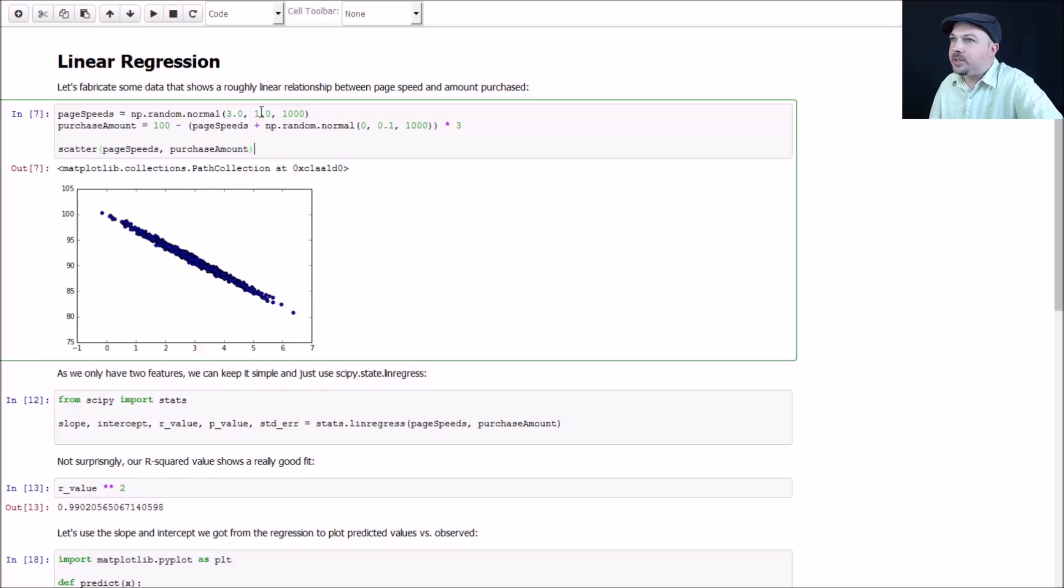I've made a normal distribution of page speeds centered around three seconds with a standard deviation of one second, and I've made the purchase amount a linear function of that. So I'm making it 100 minus the page speeds plus some normal random distribution around it times three. If we scatter that, we can see the data ends up looking like this. You can see by eyeballing it there's definitely a linear relationship going on, and that's because we hard coded a real linear relationship in our source data.